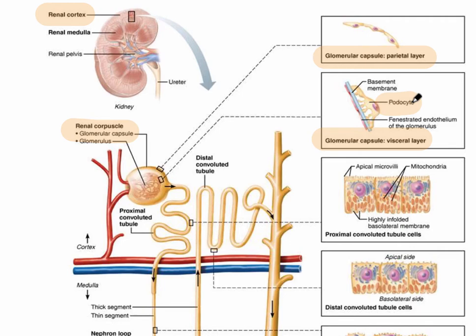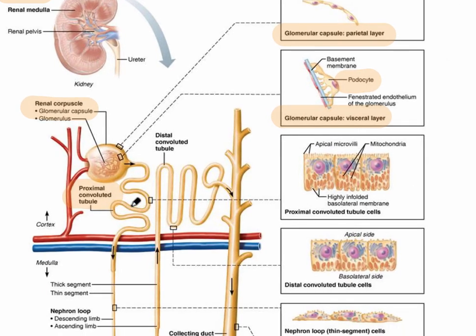The renal tubule receives the filtrate that's been formed at the glomerulus. The first part of the renal tubule is the proximal convoluted tubule. The term proximal refers to the fact that it is close to the glomerulus. Its histology shows cuboidal-looking cells and it has a much smaller lumen than other parts of the renal tubule.